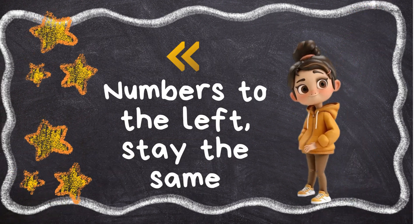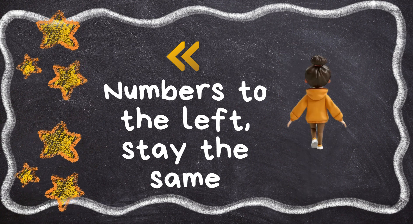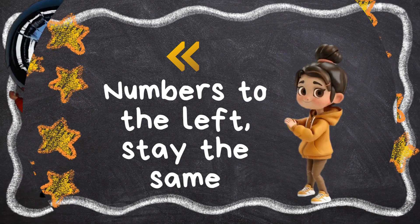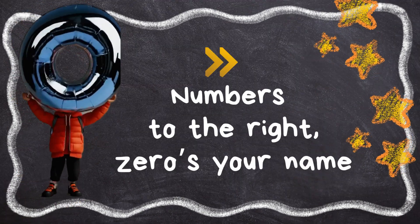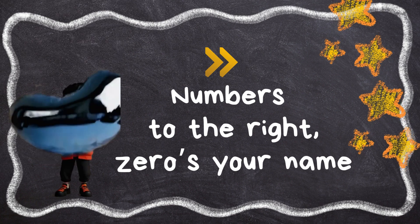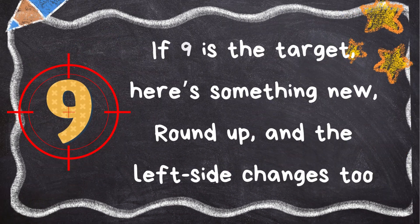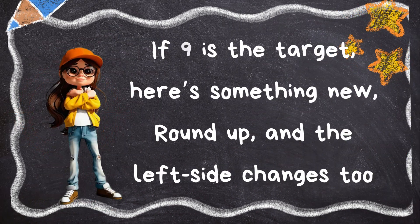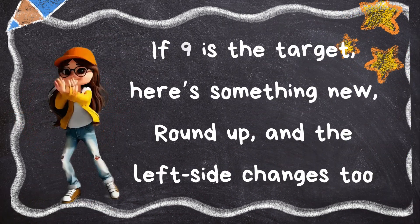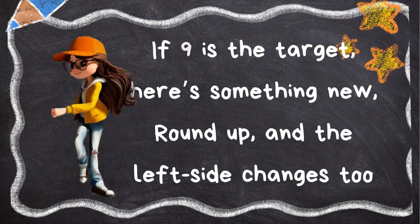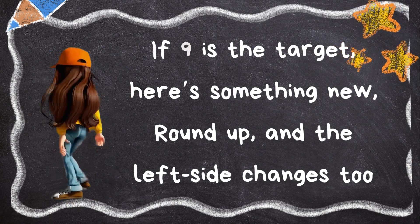Numbers to the left stay the same, numbers to the right, zero's your name. If the target is nine, here's something new — round up and the left changes too.